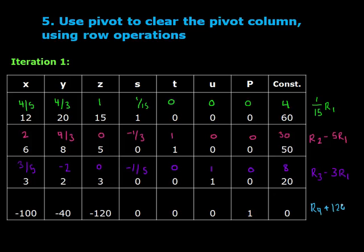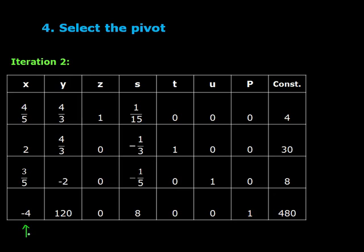And finally, row 4 plus 120 row 1. As mentioned before, we repeat steps 4 and 5 until there are no more negative numbers in the bottom row. As we can see, we still have -4, so we go back to step 4 where we must select a new pivot.